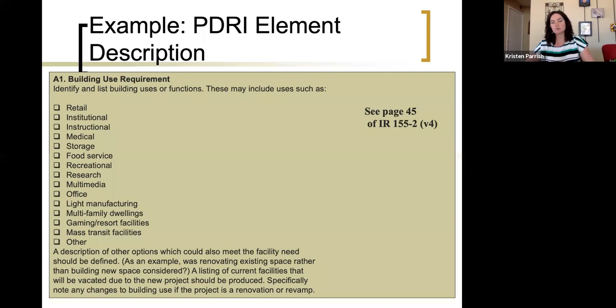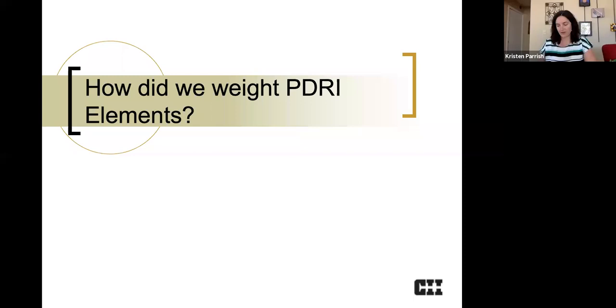And then you'll also see a description of other options, which could also mean the need should be defined. As an example, renovating your existing space rather than building new space should be considered. A listing of current facilities that will be vacated due to the new project should be produced. Specifically note any changes to building use if the project is a renovation or revamp. So the idea here would be that if you look at this and you think, okay, how clear am I about this? And that's going to result in us giving it a score or a weight.